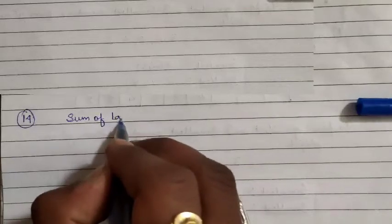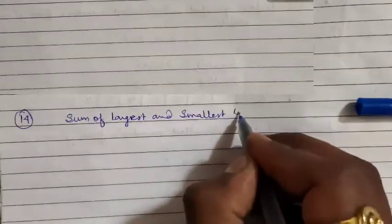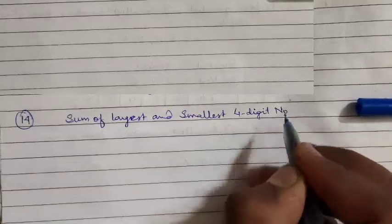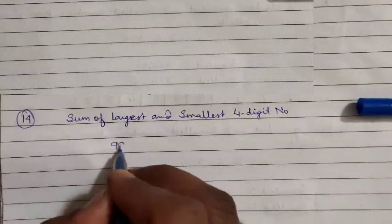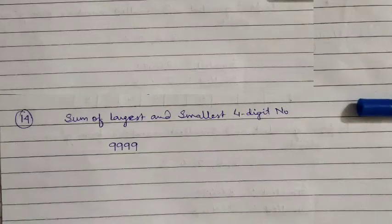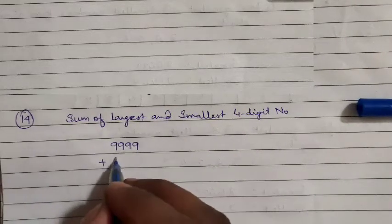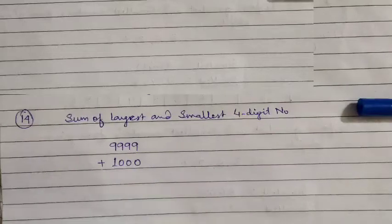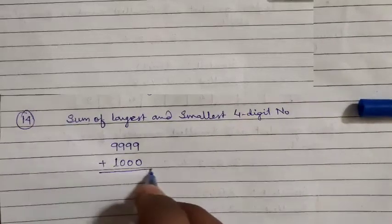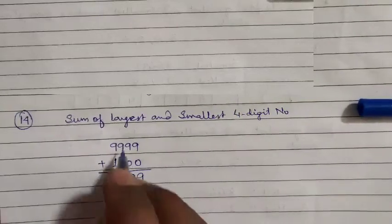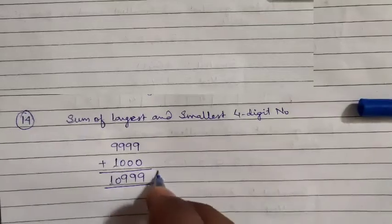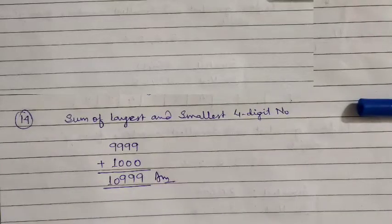Question 15 asks: Find the sum of the greatest and smallest four-digit numbers. The greatest four-digit number is 9999. The smallest four-digit number is 1000. Adding them: 9 + 0 = 9, 9 + 0 = 9, 9 + 0 = 9, 9 + 1 = 10. So the sum is 10999.